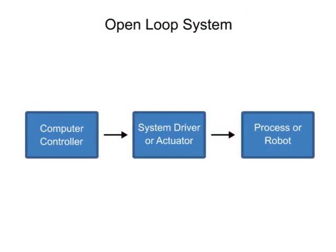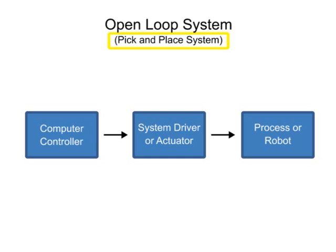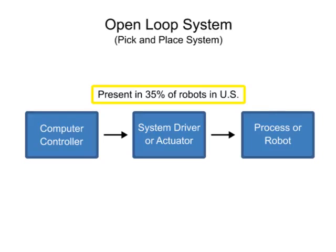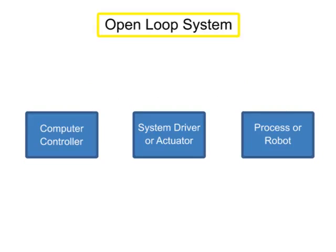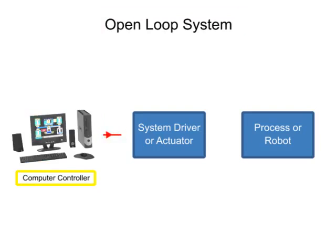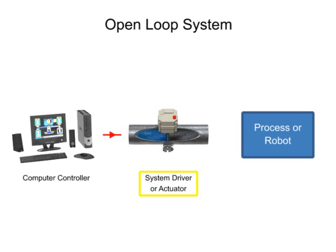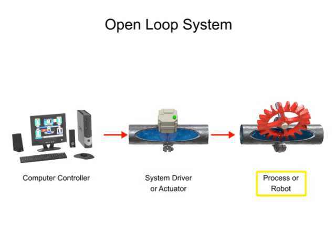This type of system is also called non-servo or pick-and-place, and is used in about 35% of the robots in the United States. In open-loop control systems, signals are first sent by a computer controller to the system driver, which then converts those signals into an operation for the process or robot to perform.